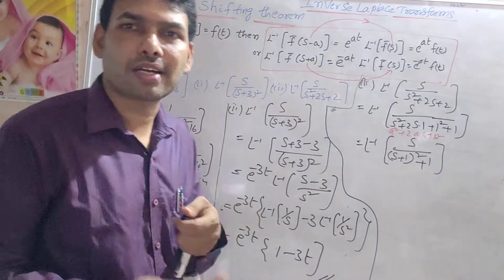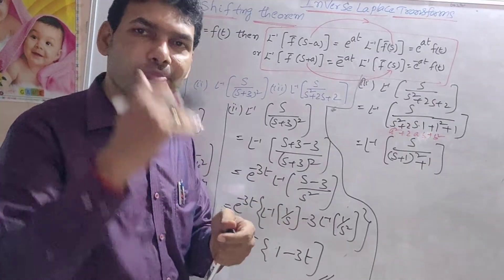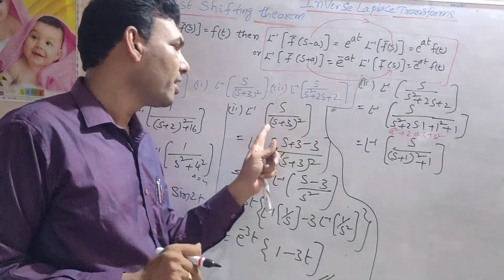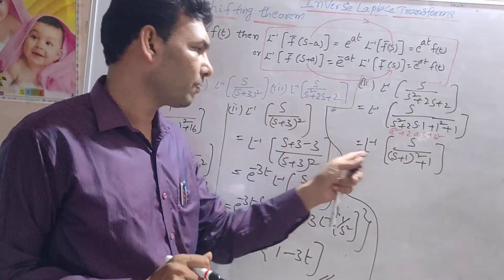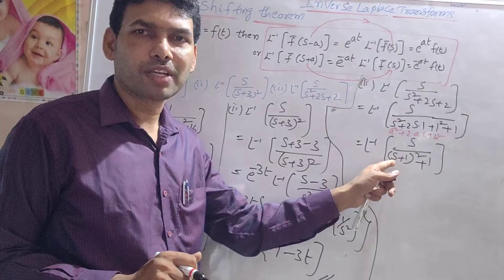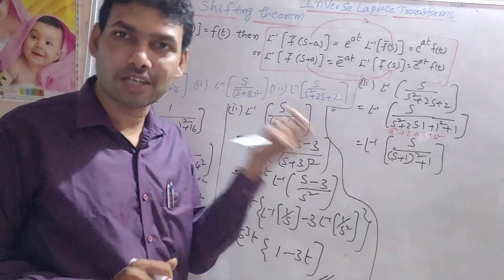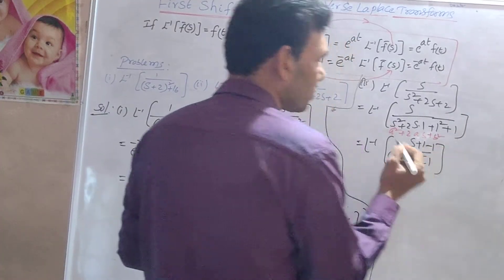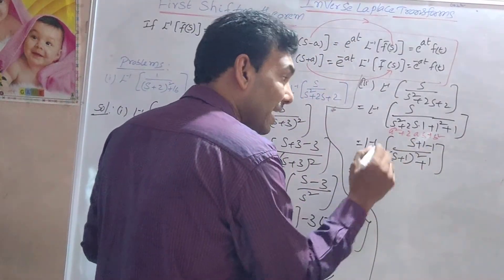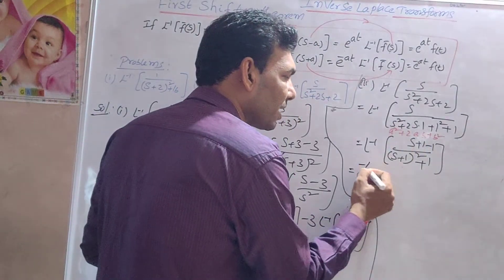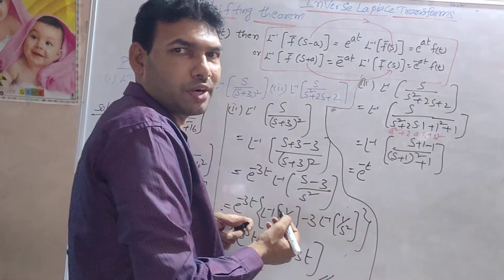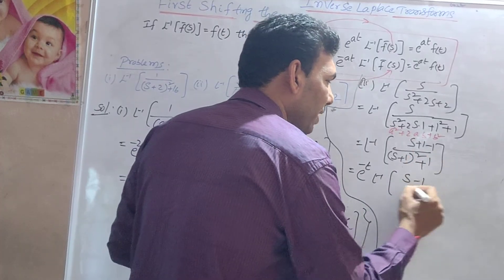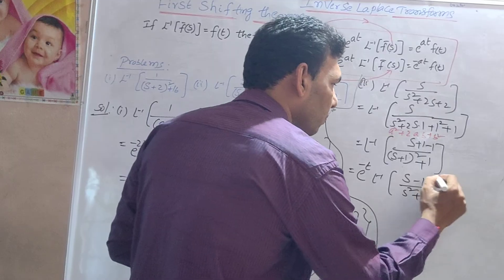Now in the numerator we have s. We write s = (s + 1) minus 1. So L inverse of s by [(s+1)² + 1] becomes L inverse of [(s+1) minus 1] by [(s+1)² + 1]. Applying the shifting theorem with e^(minus t): e^(minus t) into L inverse of [(s+1)/((s+1)²+1) minus 1/((s+1)²+1)].